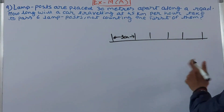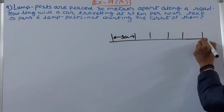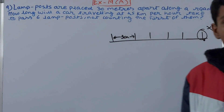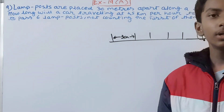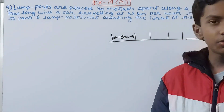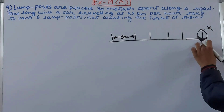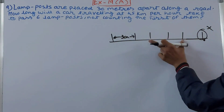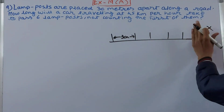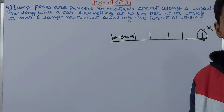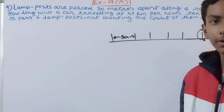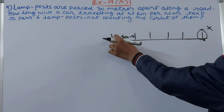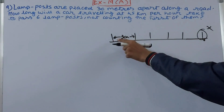So let's say the car starts from the first lamp post — this one will not be counted. So we need to find the distance from the second post to the last post. Only these five poles will be counted; the first pole will not be counted. That means we will calculate the distance from this lamp post to the last lamp post.